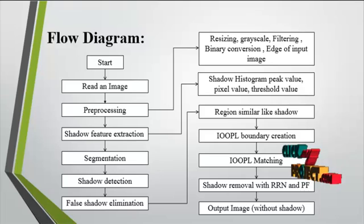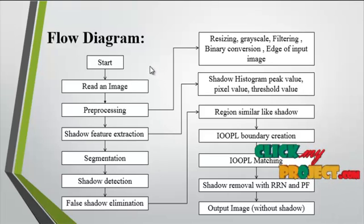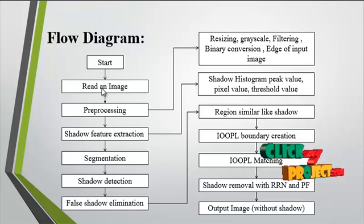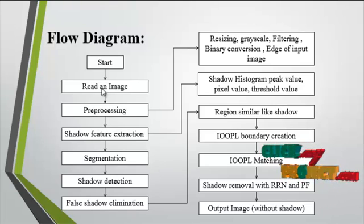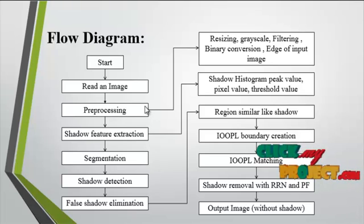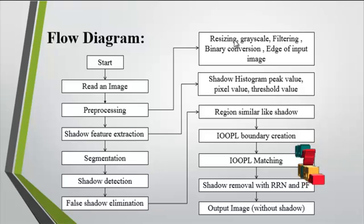Now we discuss the flow diagram. First, the process starts and an image is obtained from the dataset. The dataset image is read in MATLAB, and then preprocessing is carried out. In preprocessing, the image is resized to an optimum size and grayscale conversion is applied if needed.